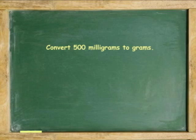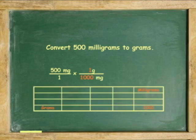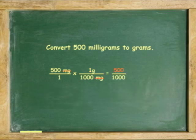Another example. Convert 500 milligrams to grams. 500 milligrams over 1 times 1 gram equals 1000 milligrams. 500 times 1 equals 500, 1 times 1000 equals 1000. Divide 500 by 1000. 0.5 grams is the answer.